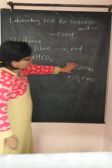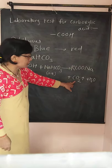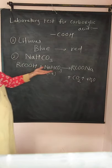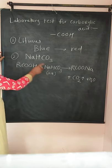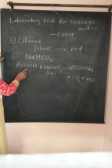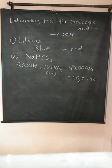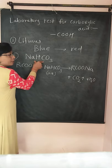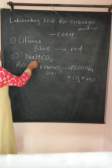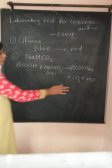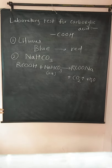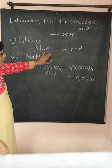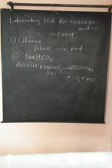The salt formed is a water-soluble salt. The evolution of CO₂ gas — brisk effervescence — indicates the presence of the COOH group in the sample. This is the second laboratory test for carboxylic acids.